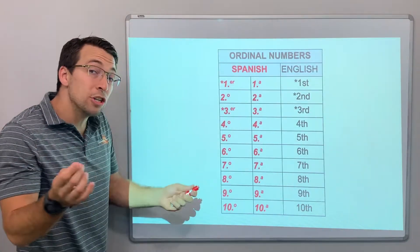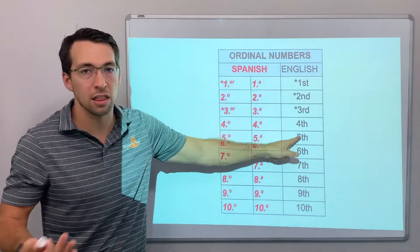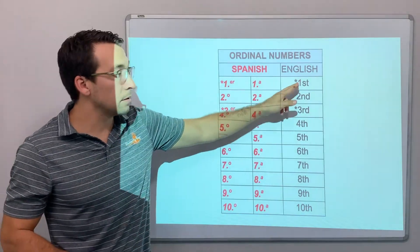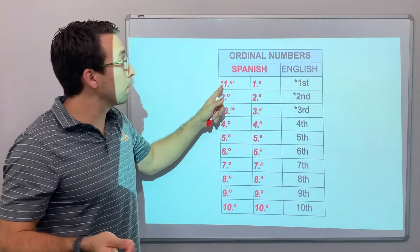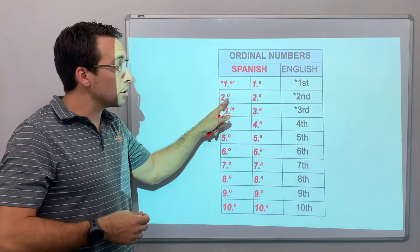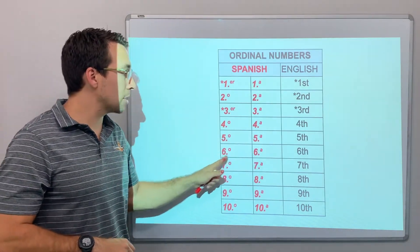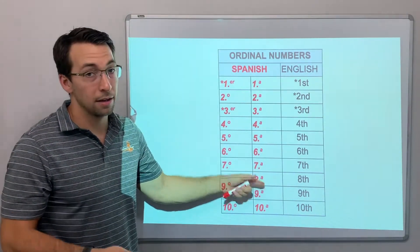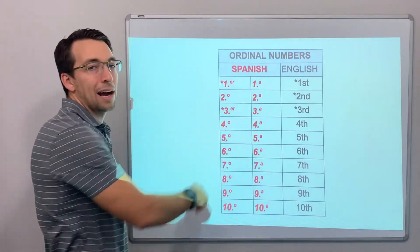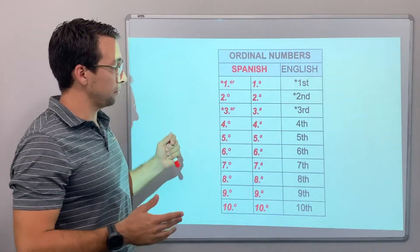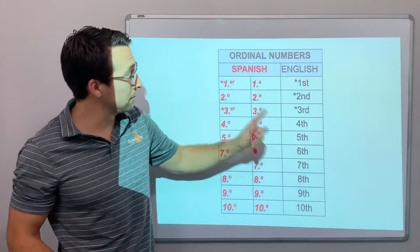Check it out. If you're writing it shorthand — in English we'd say first, second, third, and then everything else is fourth, fifth, sixth, seventh, eighth — this is what we do in Spanish. Primer or primera. Segundo, segunda. Tercer or tercera. Cuarto, cuarta. Quinto, quinta. Sexto, sexta. Séptimo, séptima. You just write the number, a period, and then smaller: ER or O, or O or A. This is ordinal number shorthand. If you're writing in Spanish, write this.